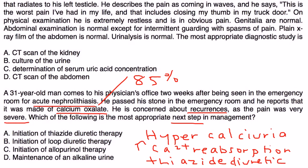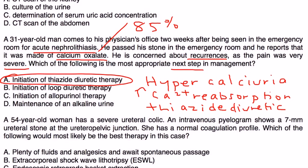A thiazide diuretic is used to prevent the reoccurrence of calcium stones. These thiazide diuretics decrease the urine calcium levels and therefore decrease the rate of calcium stone formation. So that would be choice A.